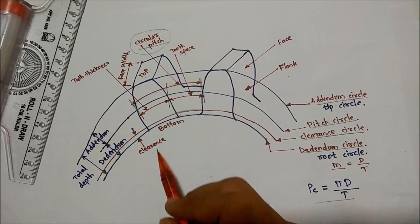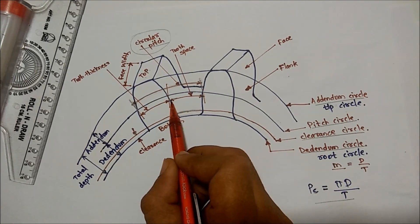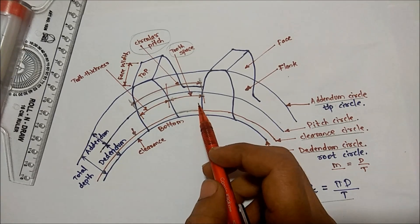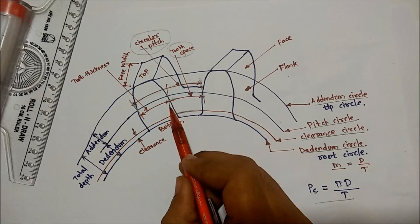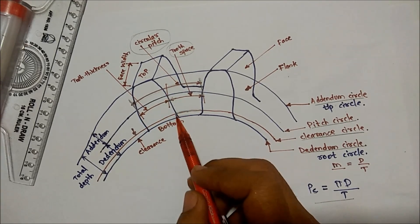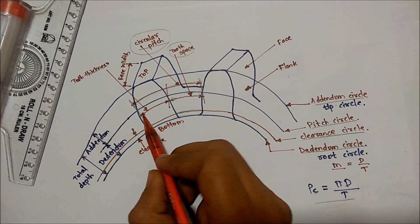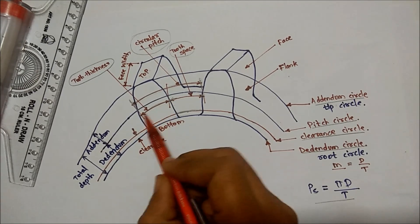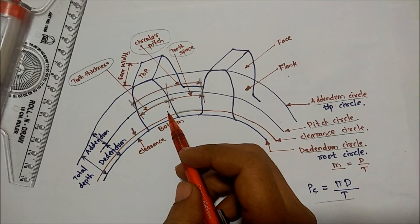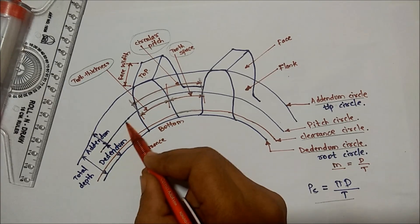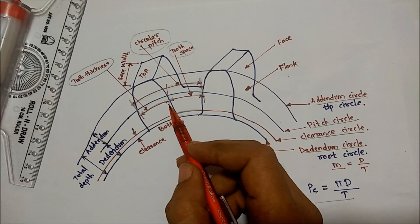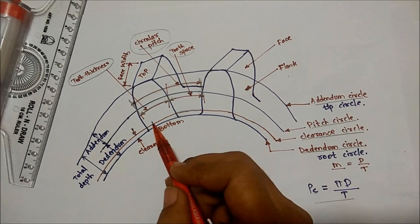Tooth space is the width of the space between two adjacent teeth. Tooth thickness is the width of the tooth measured along the pitch circle.